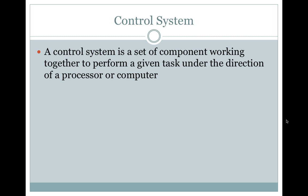Control system. A control system is a set of components working together to perform a given task under the direction of a processor or computer.